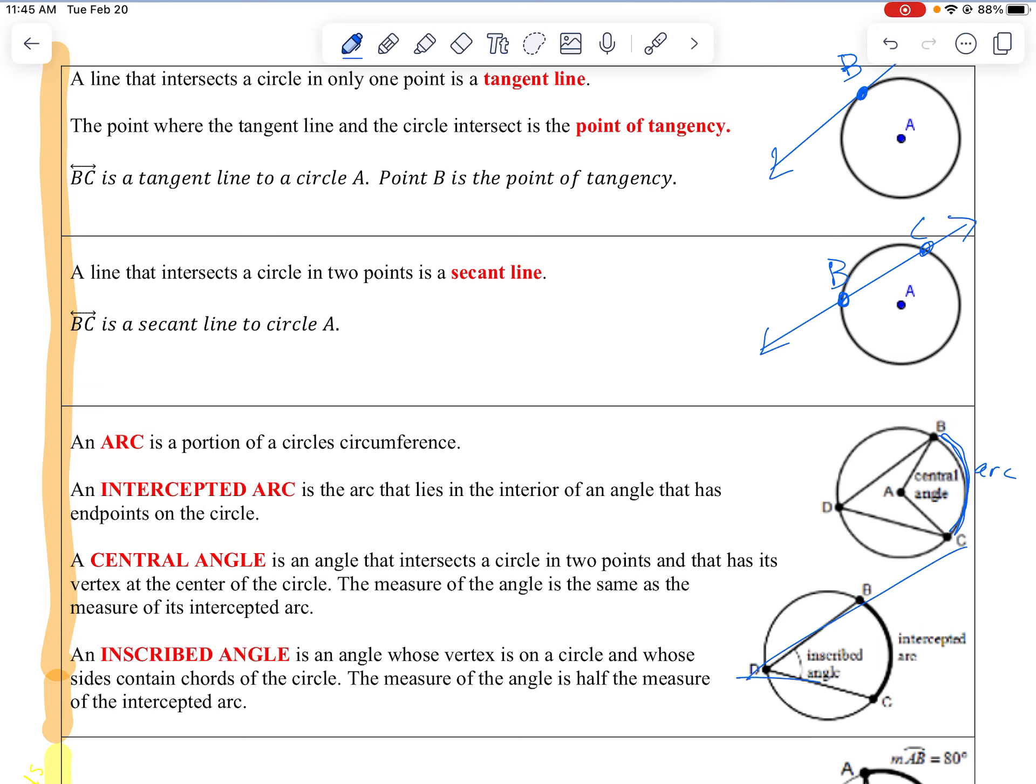So we have an inscribed angle here. This part here is called an arc. It's called an intercepted arc. So an arc is just part of a circle. If it happens to be inside another shape, it's called an inscribed intercepted arc. So there you go.